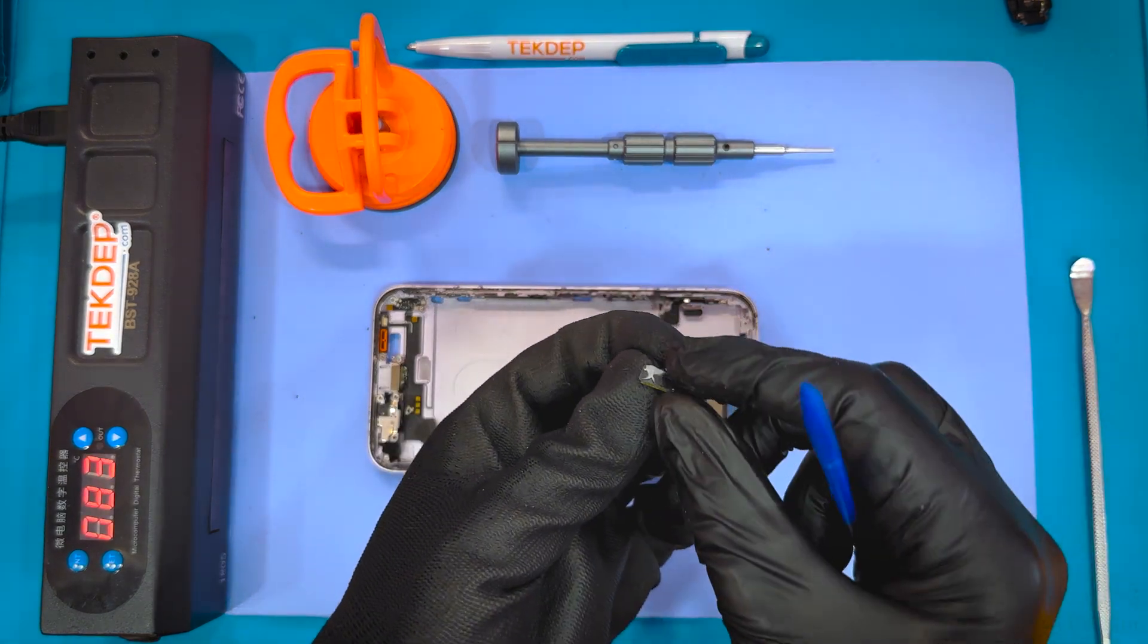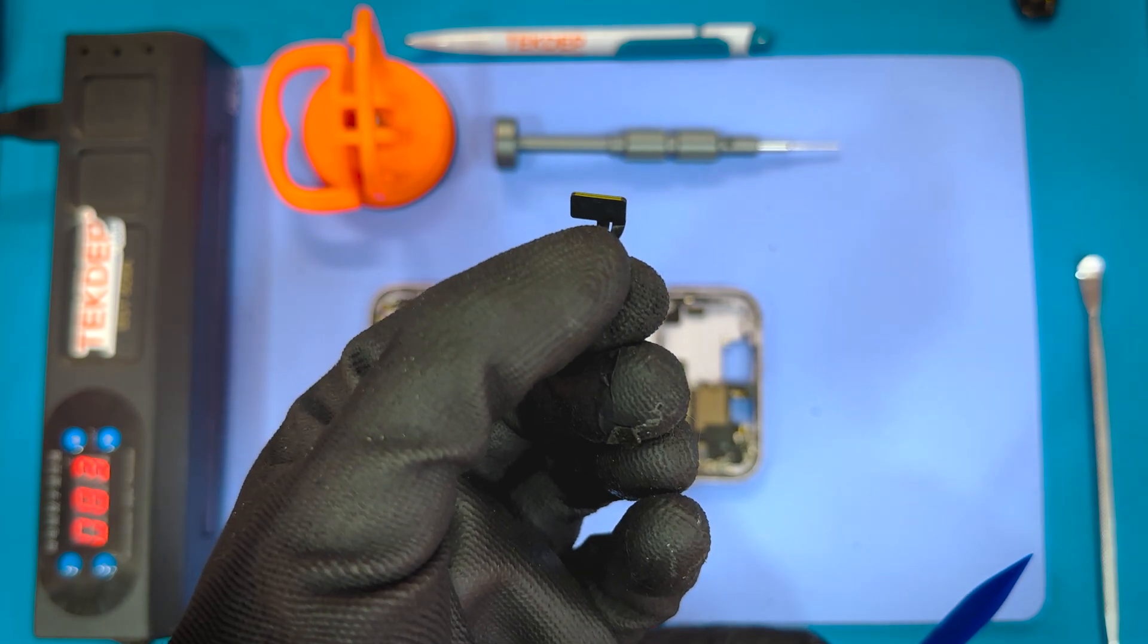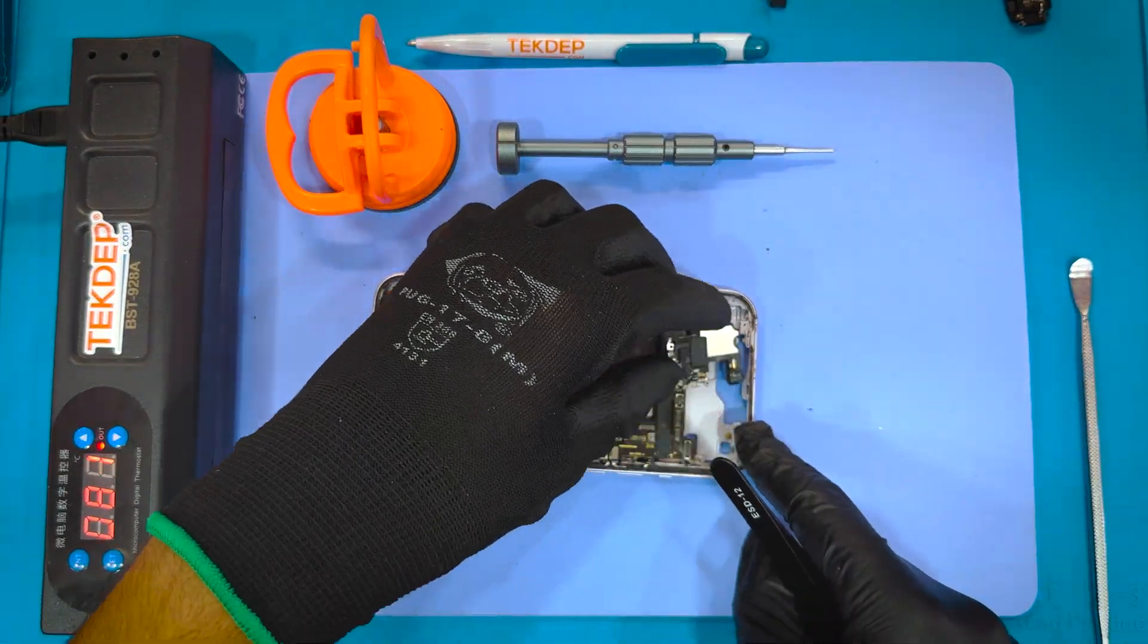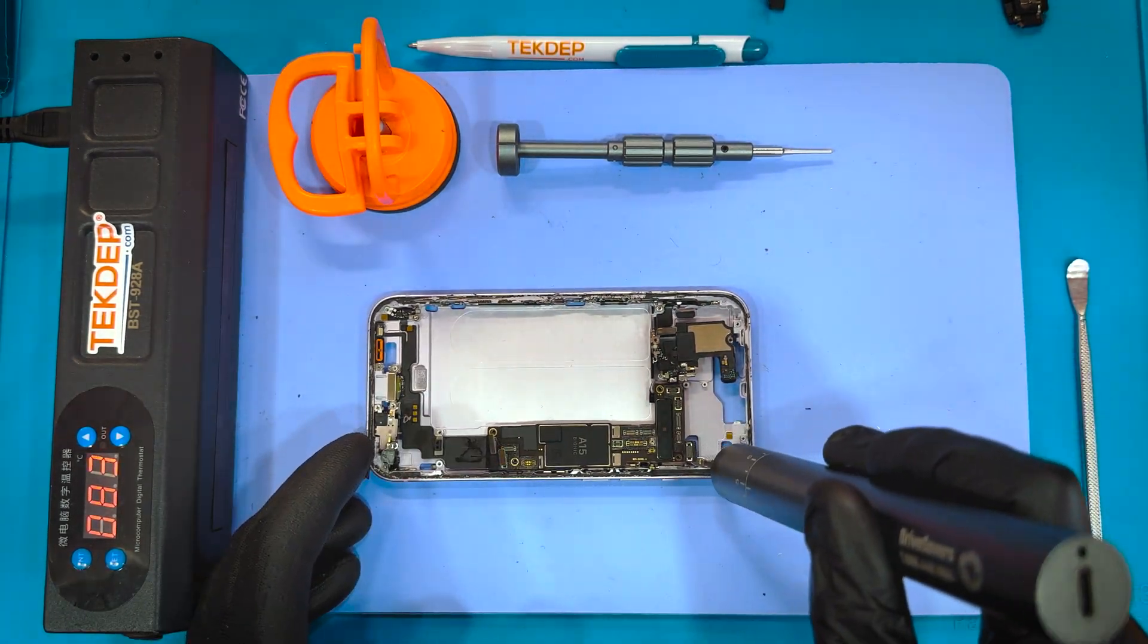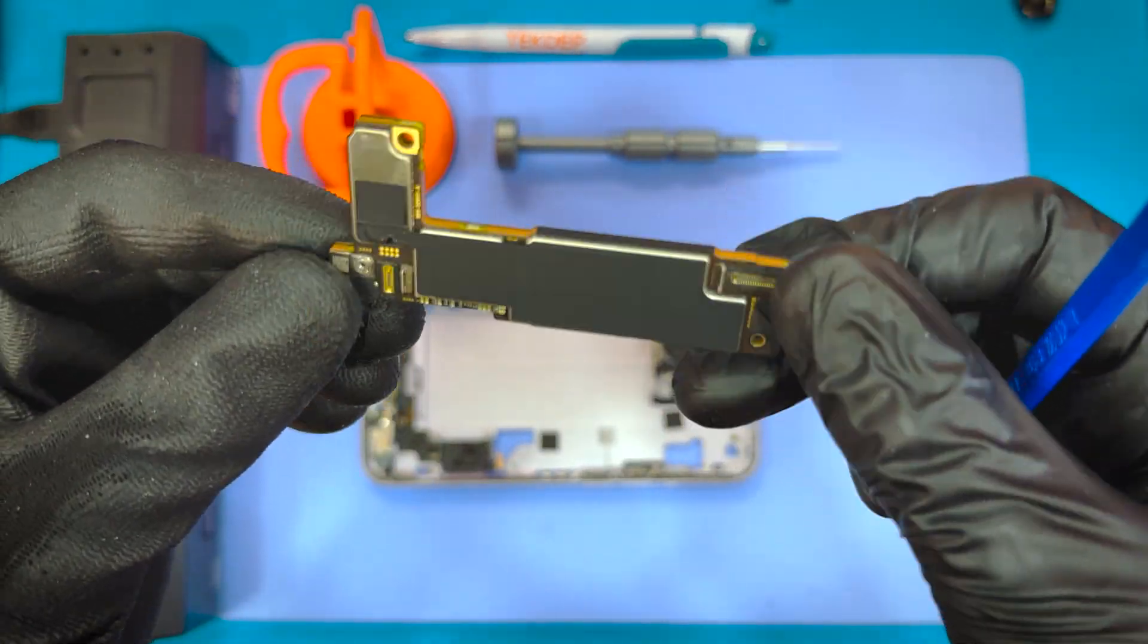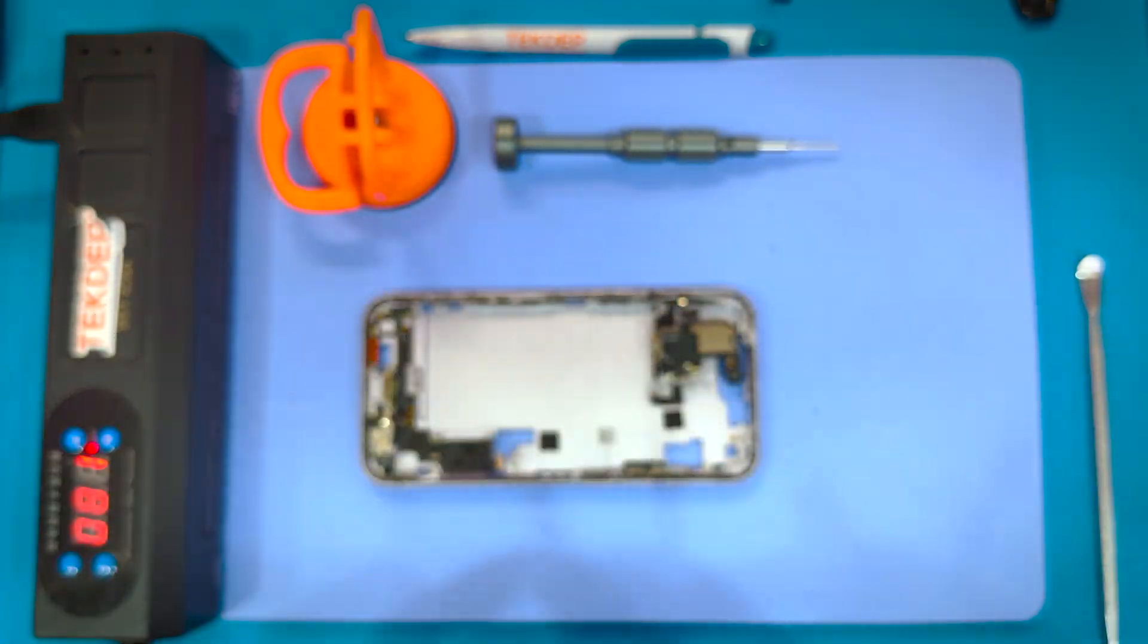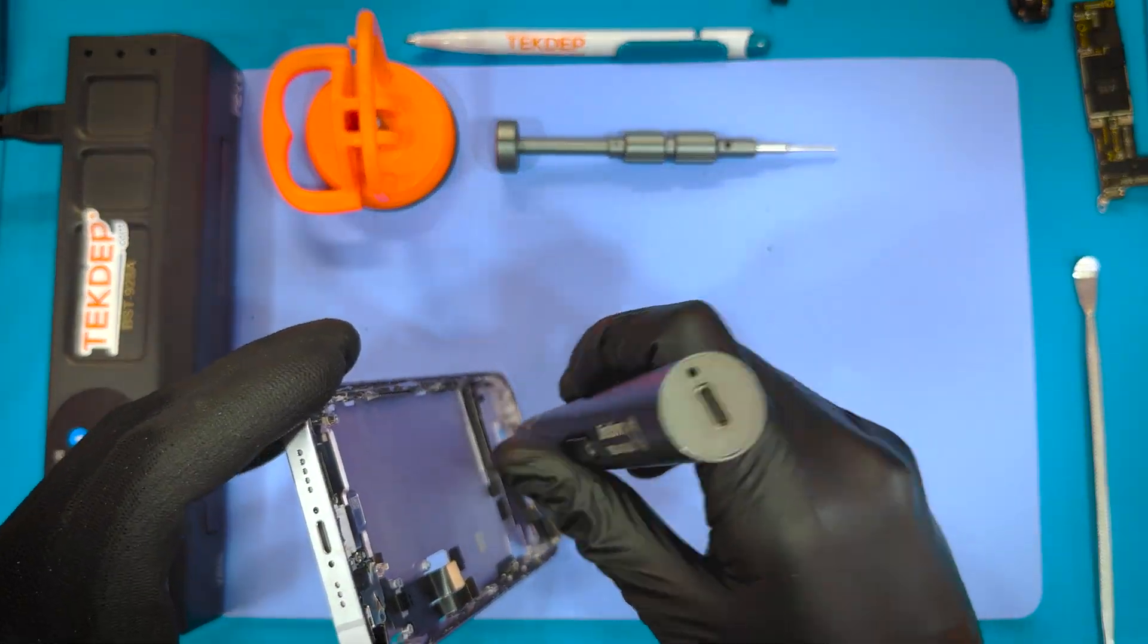That is the GPS right there. This time it actually comes equipped with a flex cable which is different from the predecessor. Not sure of the advantages and disadvantages of that. But next we are going to get to work on that board, that motherboard, that A15 bionic chip, which you see now. There she is in all her glory. And I think next is the top speaker, which is what we're working with right at the top there.